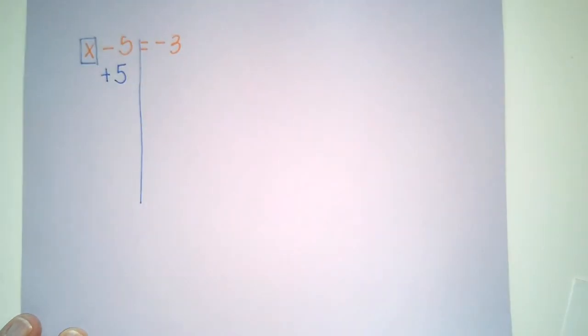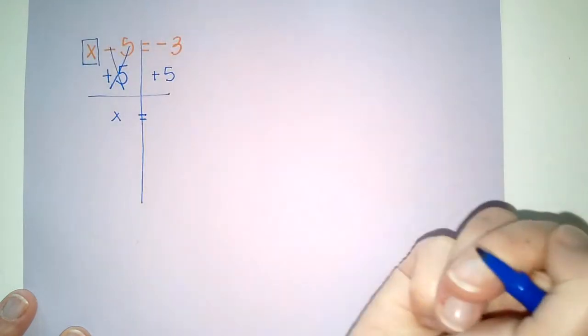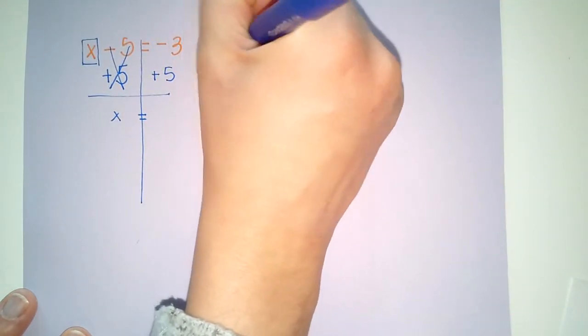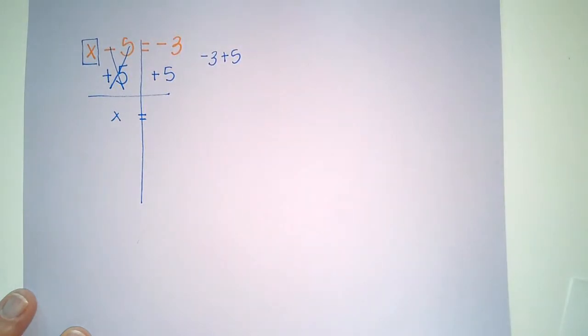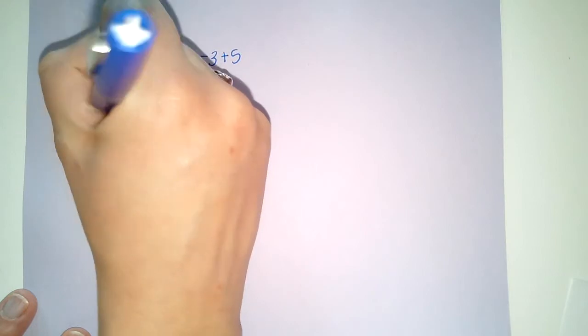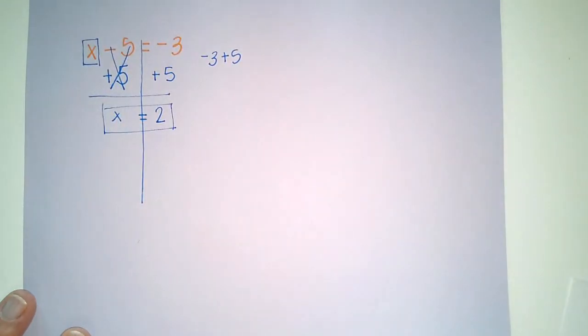So to inverse that, I add 5. Because I add 5 on this side, I will also add 5 on this side. These cancel out. I'm left with only x on this side. Now I have -3+5. Knowing my integer rules, that gets me to a solution of 2.